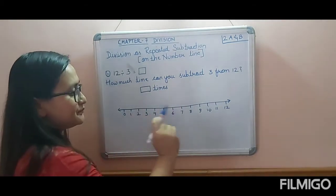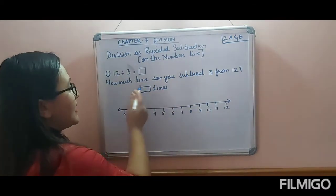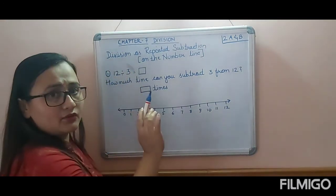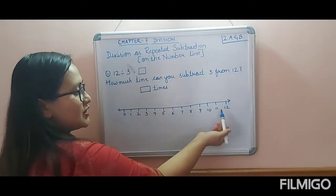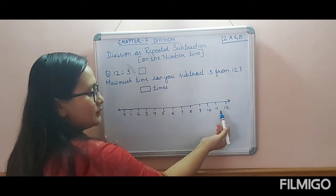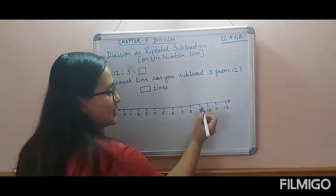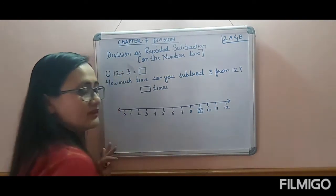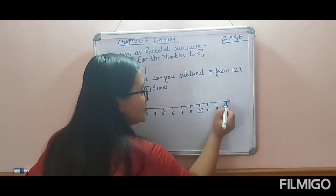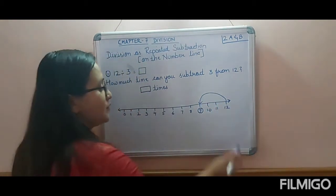We will start jumping from 12. We have to jump three numbers at a time because we are doing 12 divided by 3. So from 12, we count back: one, two, three — and where you land, put a circle so you don't miss your jump. That is your first jump.